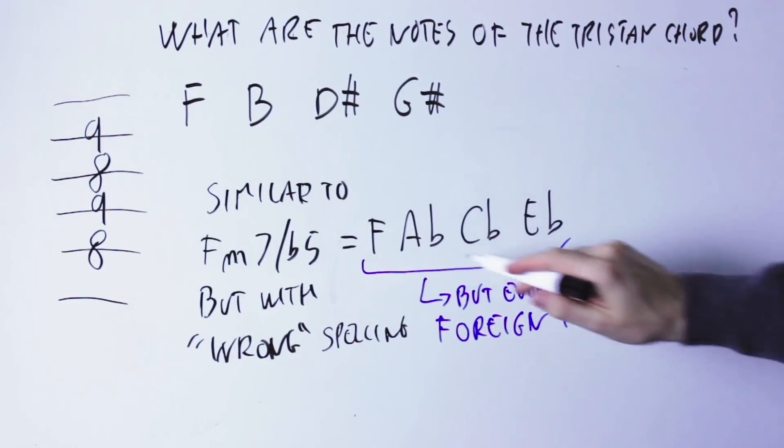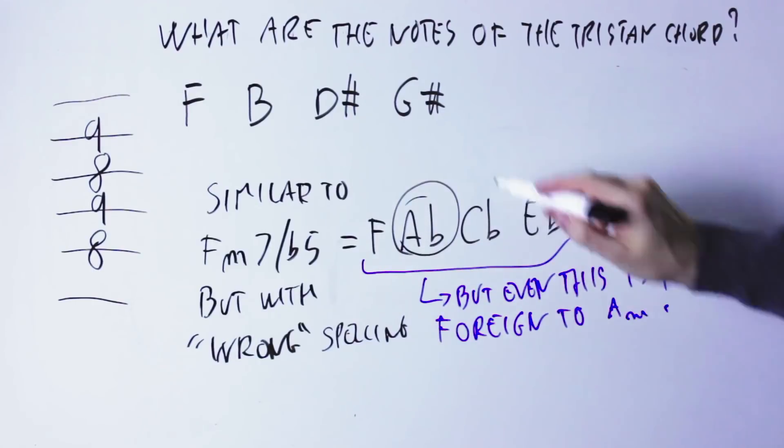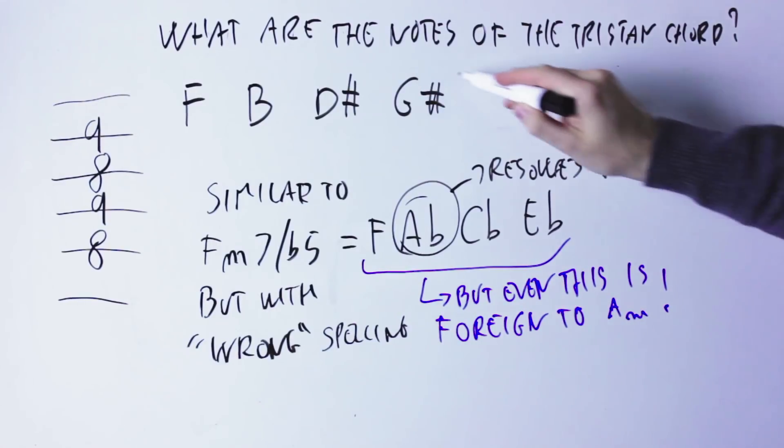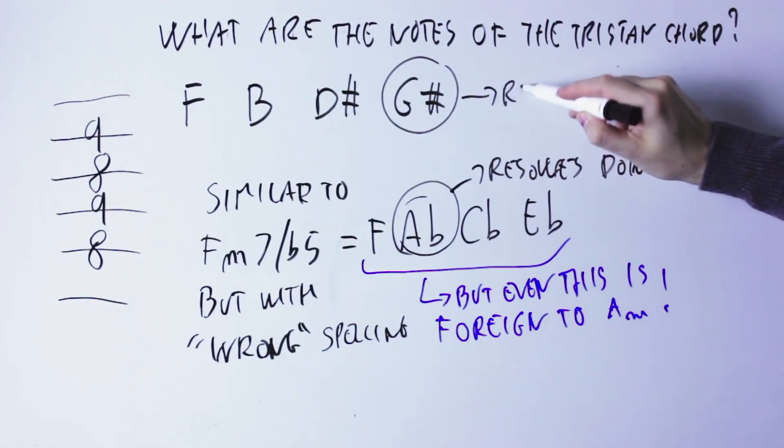Conventionally, if you write the note A flat in the key of A minor, you mean that this tension note will resolve down to a G. While if you write the same note as G sharp, you mean that this note is going to resolve up to an A.